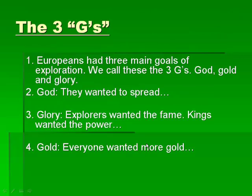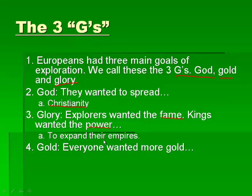So why are these people wanting to explore? There are three main goals of exploration — we call them the three G's: God, Gold, and Glory. God — they wanted to spread Christianity. Glory — the explorers wanted the fame, kings wanted the power, and to get power you have to get more land, because more land means more resources, and more resources means more money, so they want to expand their empires and expand their control. And the last one is Gold — everybody wanted gold, it's more money. God, Glory, Gold.